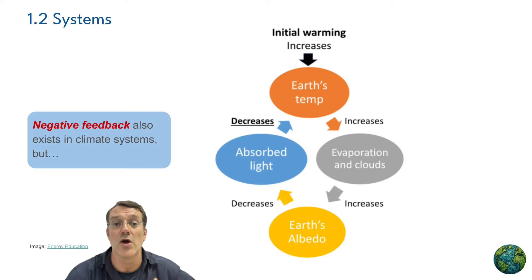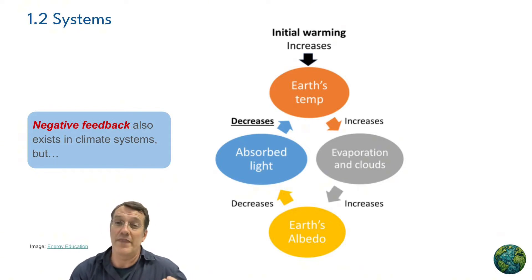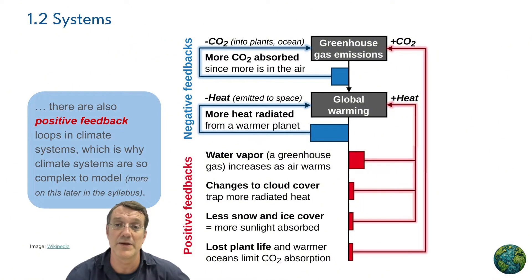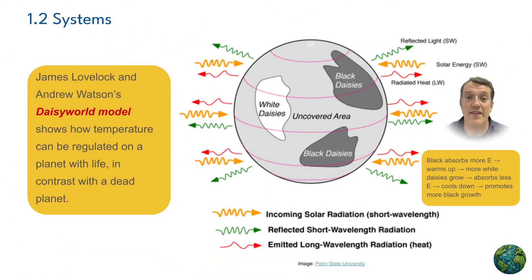Climate systems also exhibit negative feedback, but they're more complicated by having positive feedback loops intermingled. We'll take a deeper look at that in topic six.